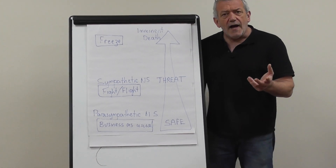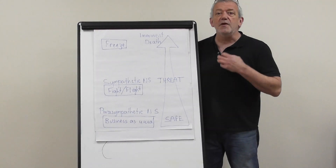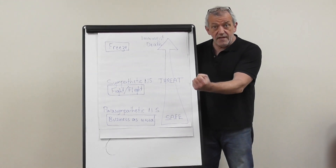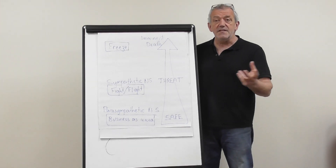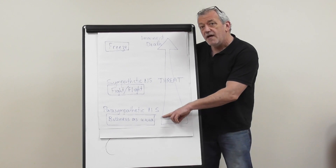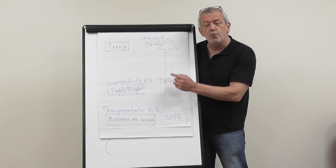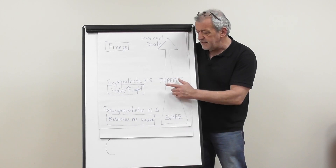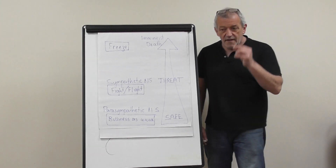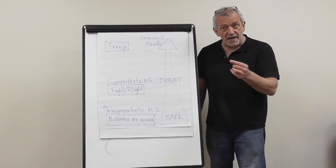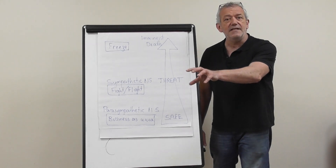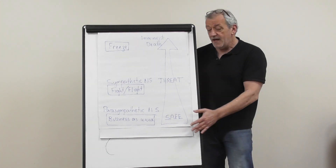When a threat comes along — the dog runs in the room, my job's on the line, my relationship's in trouble, I've just been divorced, a threat to our sense of belonging or survival, money, jobs — these are naturally threatening. If it's a sudden threat, we rush instantaneously into our fight/flight system, our sympathetic nervous system, which gears us to deal with threat by either fleeing from it or fighting to negate the danger.